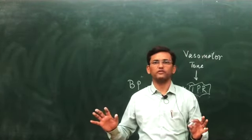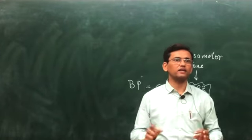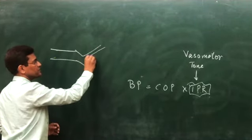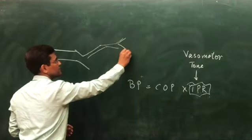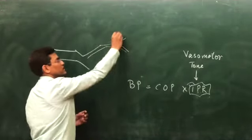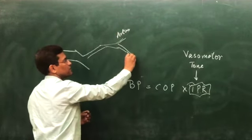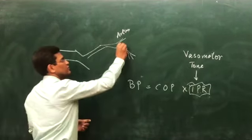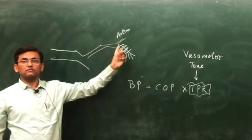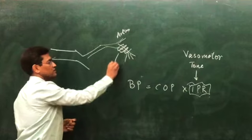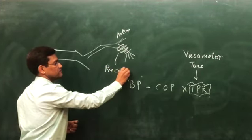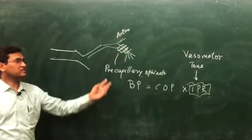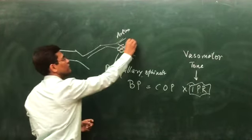Where the big arteries divide into smaller arteries, they continue dividing until they reach the level called arterioles, then into capillaries. Before the capillaries, at the arteriole level, there are sphincters called precapillary sphincters. These precapillary sphincters control constriction and blood flow at the arteriole level.